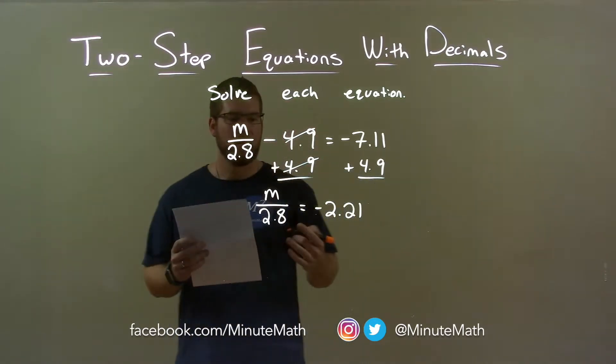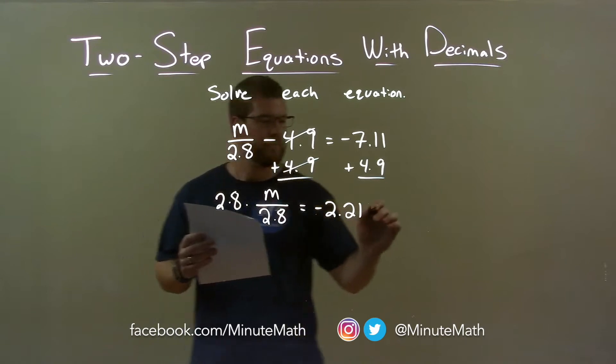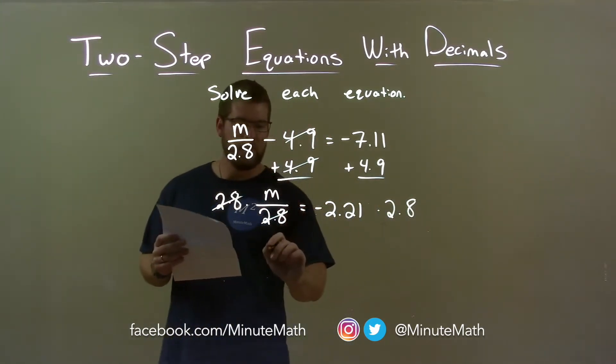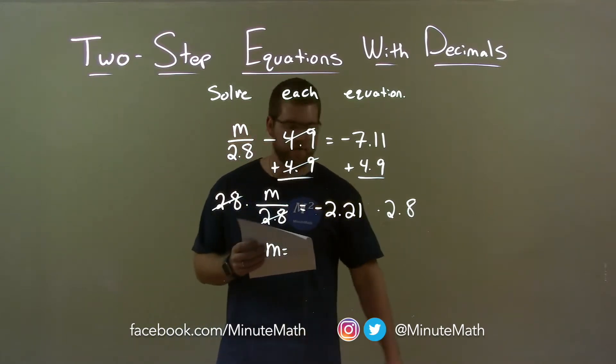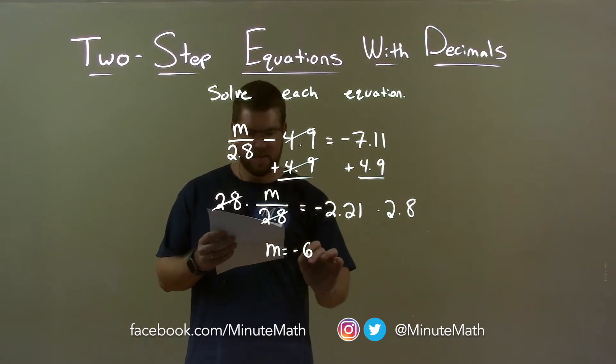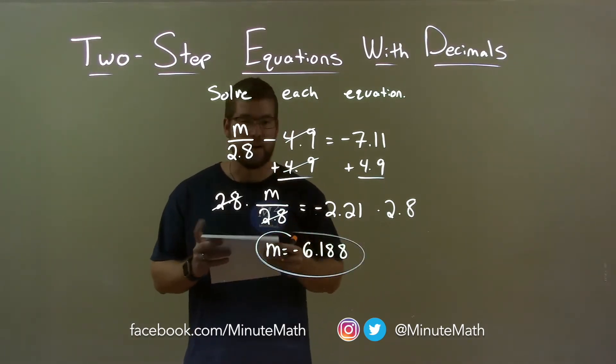Then from there I'm going to multiply 2.8 to both sides. This will eliminate the 2.8 in the denominator there, giving me m by itself here and negative 2.21 times 2.8 is negative 6.188 and there we have our final answer.